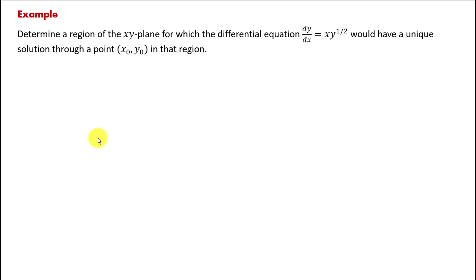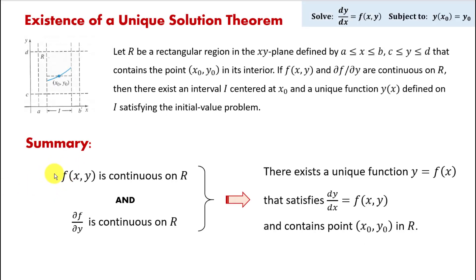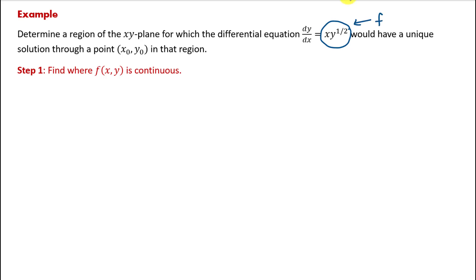Remember those two conditions of the theorem? f of xy is continuous on R, and the partial derivative of f with respect to y is also continuous. Those are the two conditions we're going to work with. In step one we need to find where function f of xy is continuous. The function f of xy is the right-hand side of the first-order differential equation in general form — so here f of xy equals x times y to the power one-half.